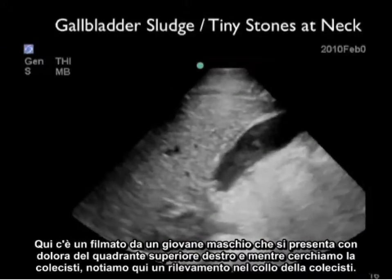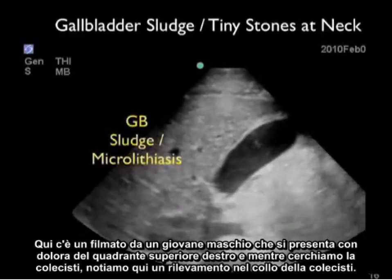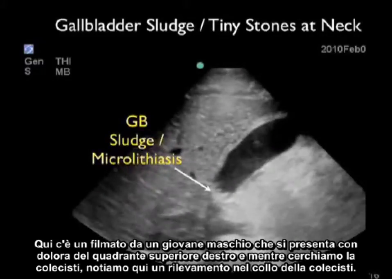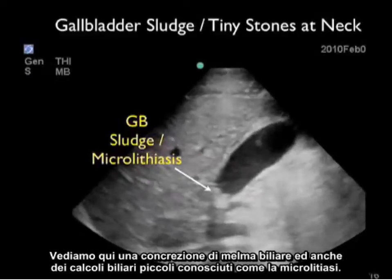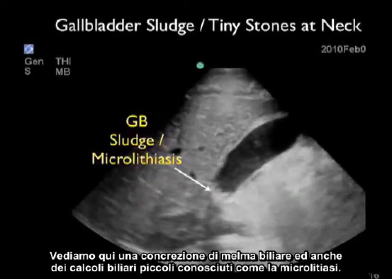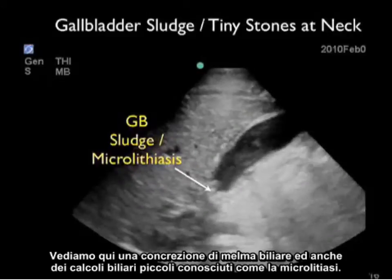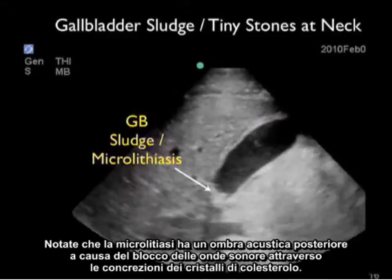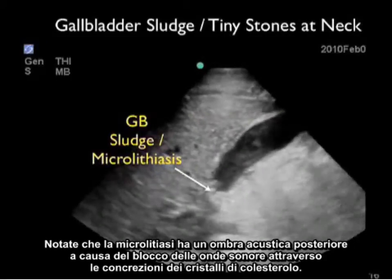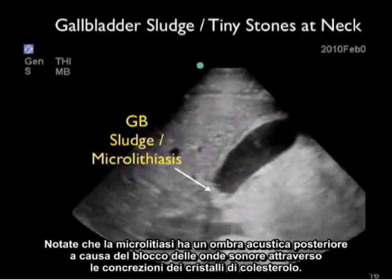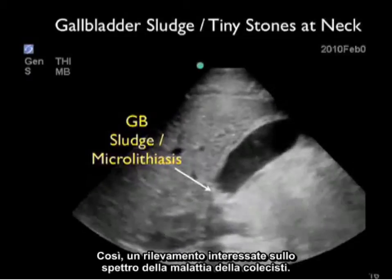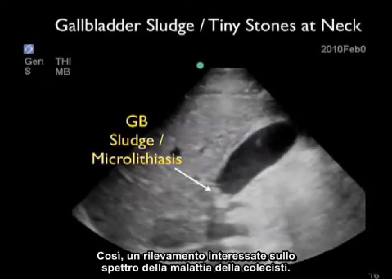Here's a video clip from a young male presenting with right upper quadrant pain. As we look through the gallbladder, we notice a finding within the neck: a concretion of gallbladder sludge and also tiny gallbladder stones known as microlithiasis. Notice that the microlithiasis has posterior acoustic shadowing due to the blocking of sound waves through the concretions of cholesterol crystals — an interesting finding on the spectrum of gallbladder disease.